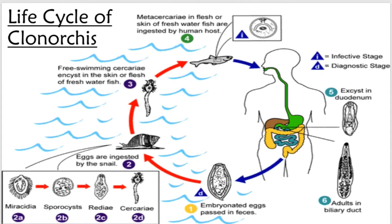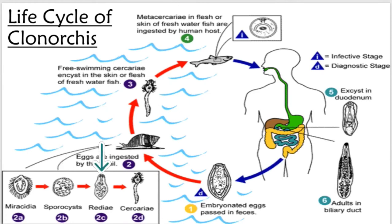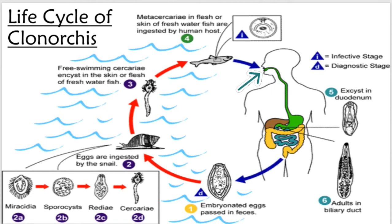In the dramatic representation of the life cycle: embryonated eggs released by humans in feces are ingested by freshwater snails, where they differentiate into larvae through four stages — Miracidia, Sporocyst, Redia, and Cercaria. These free-swimming cercariae encyst in the skin or flesh of freshwater fish and differentiate into Metacercaria. Metacercaria in the flesh or skin of freshwater fish are ingested by human hosts. After excystation in the duodenum, adult flukes make their way to the biliary ducts — that is why they are called liver flukes.